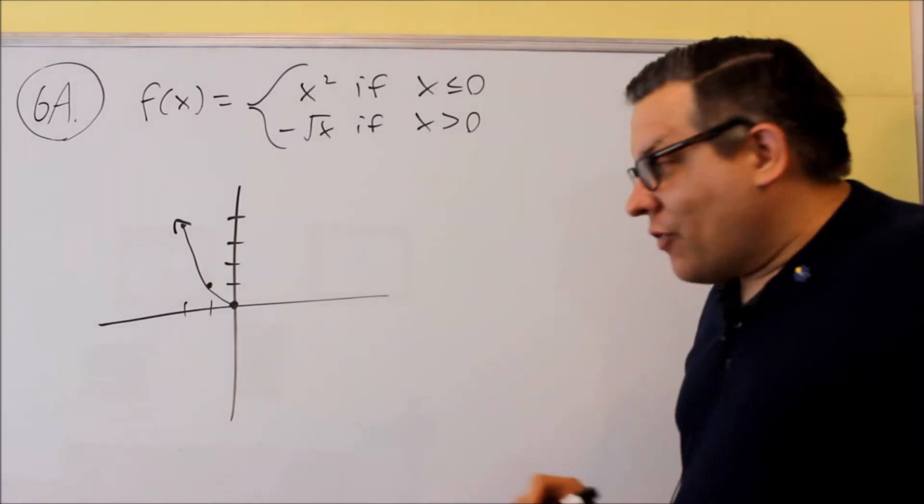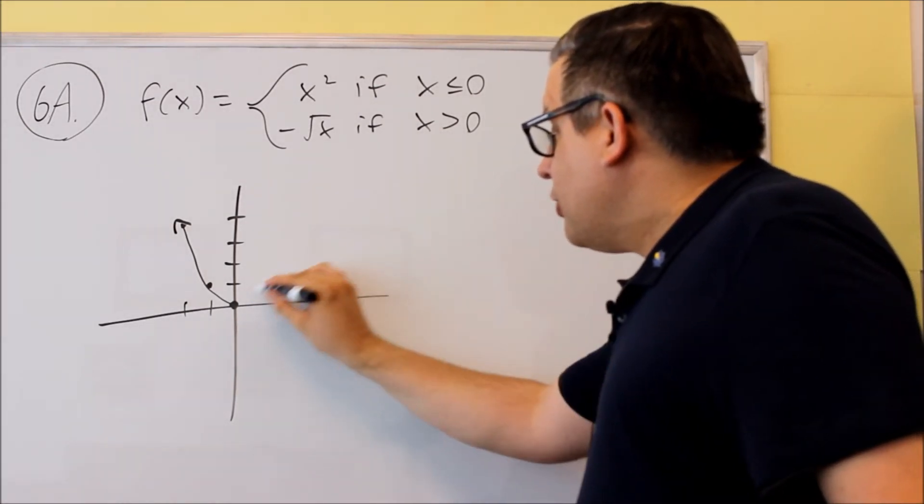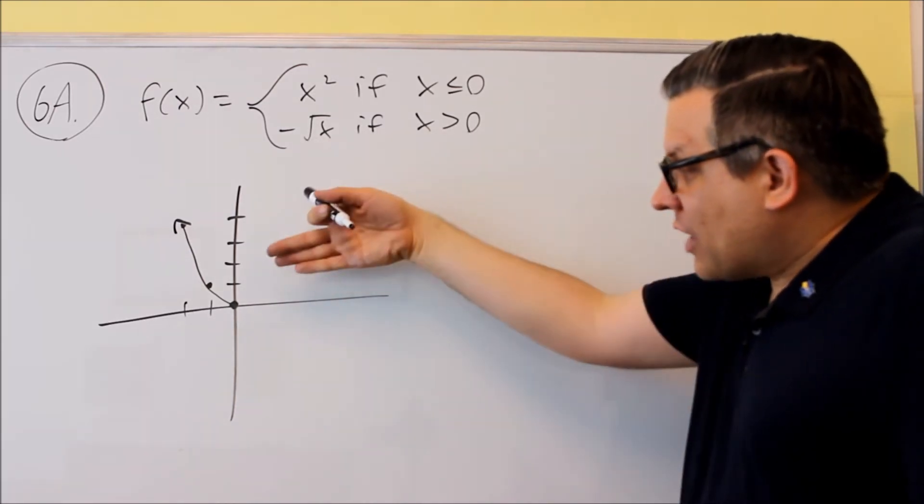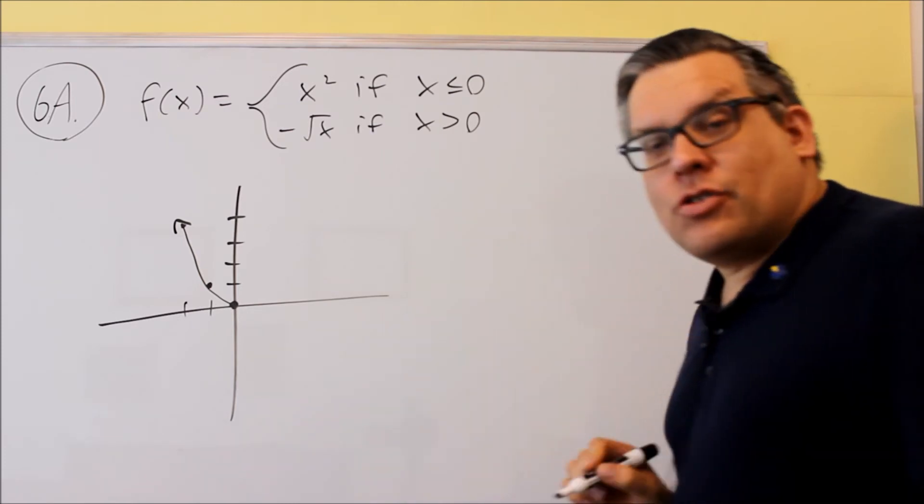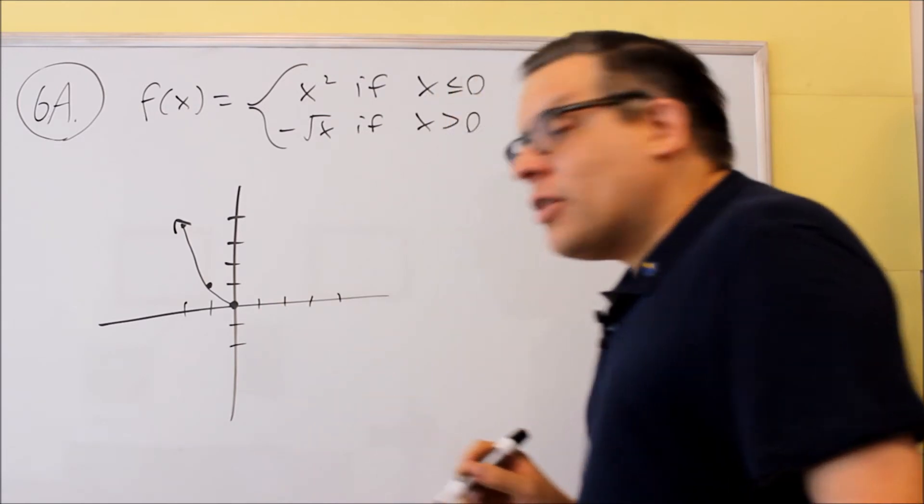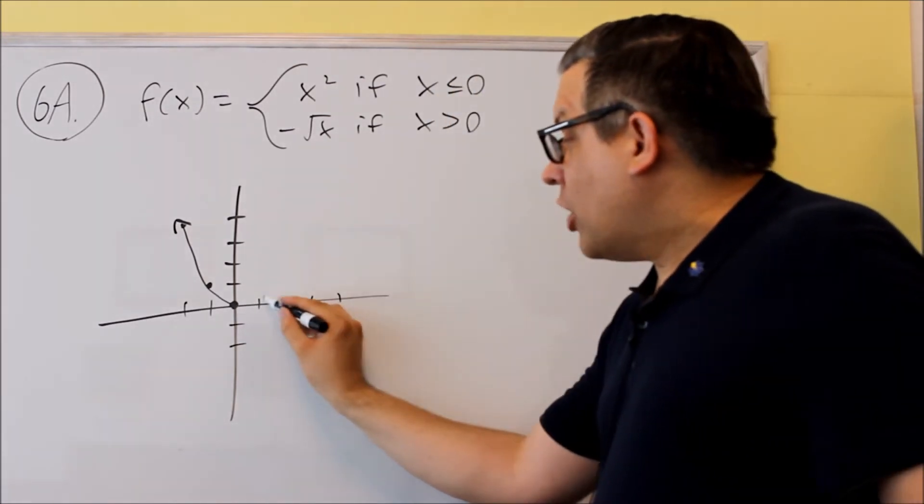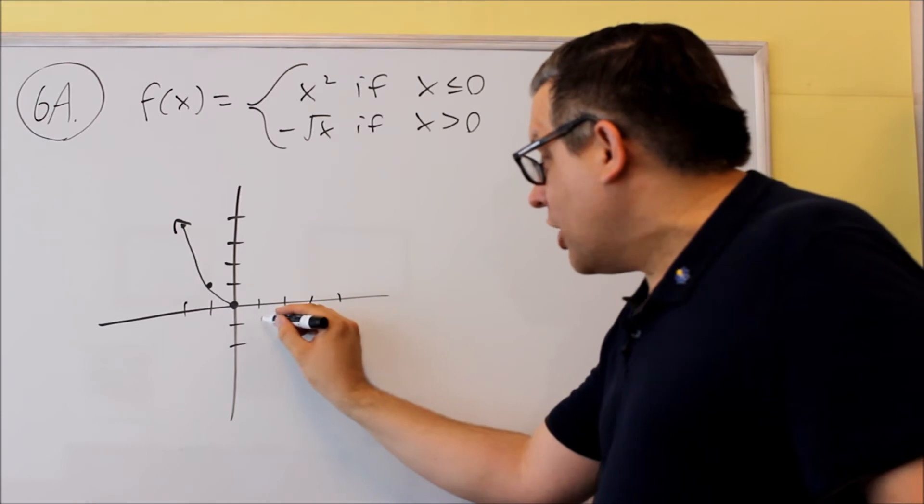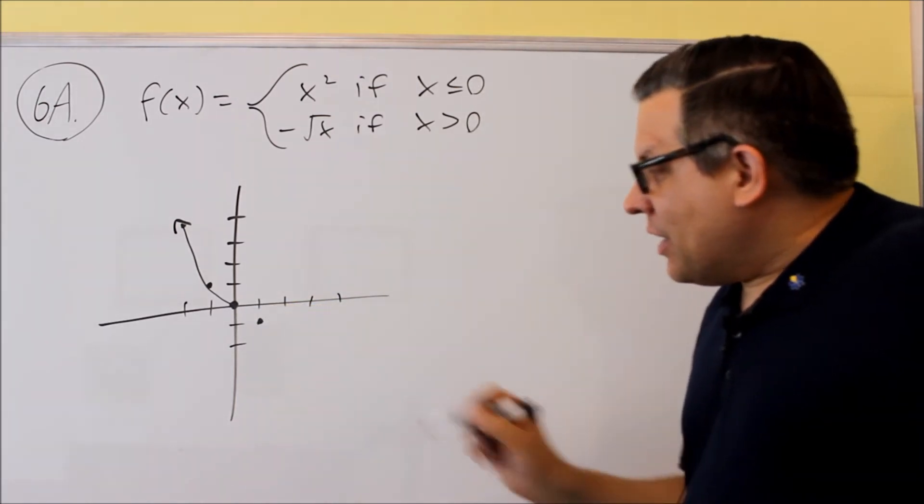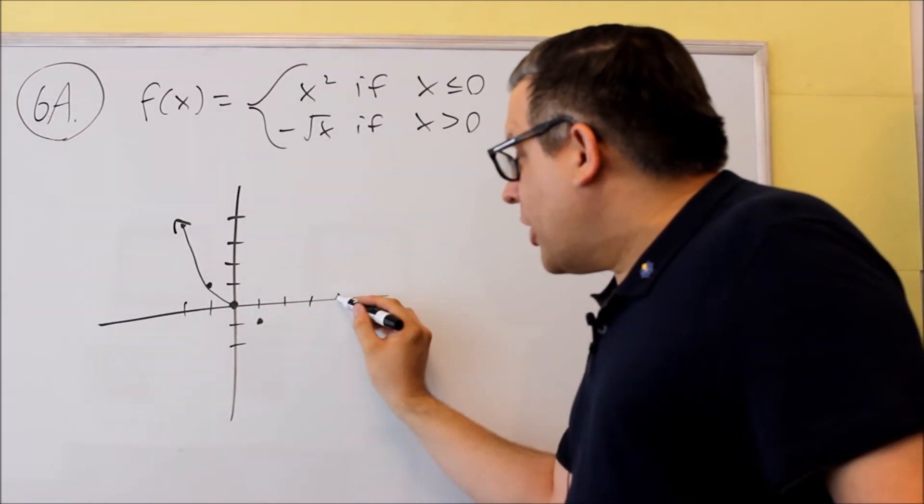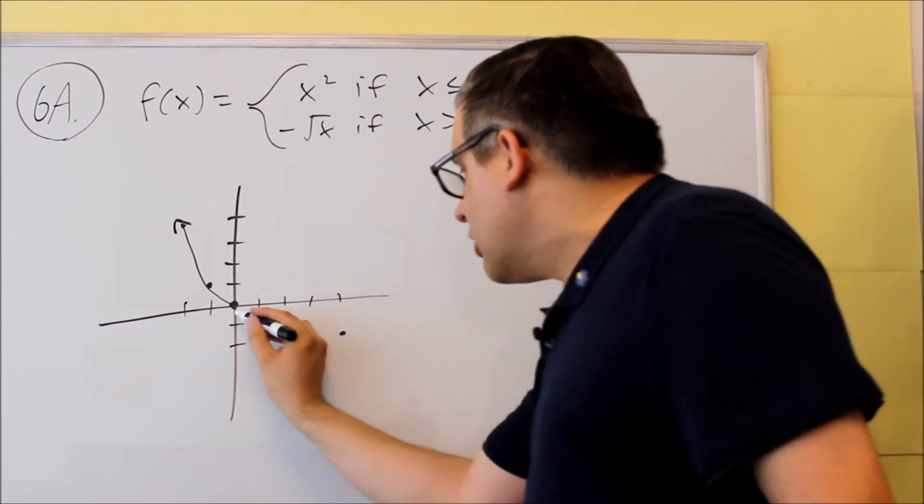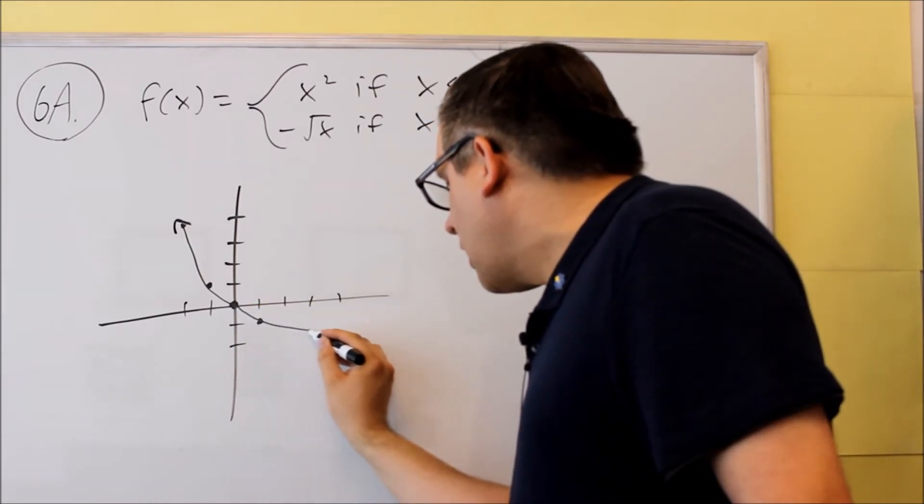Now for the square root graph, normally the square root graph does this, it goes up. But we have a negative in front, which means that that's going to flip the graph over, so it's going to come down and do this. So here's the points, the key points we had for the square root. Normally we would have 1, 1, but instead of 1, 1 we're going to go down this way. So we're going to have 1, negative 1. Next, we have, normally we would have 4, 2, but instead we're going to go 4, negative 2. We still have a 0, so it's going to do something like this.